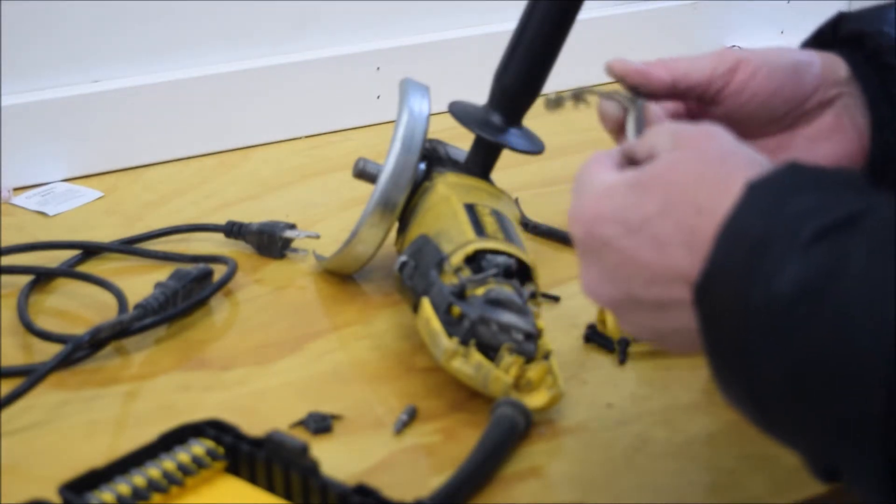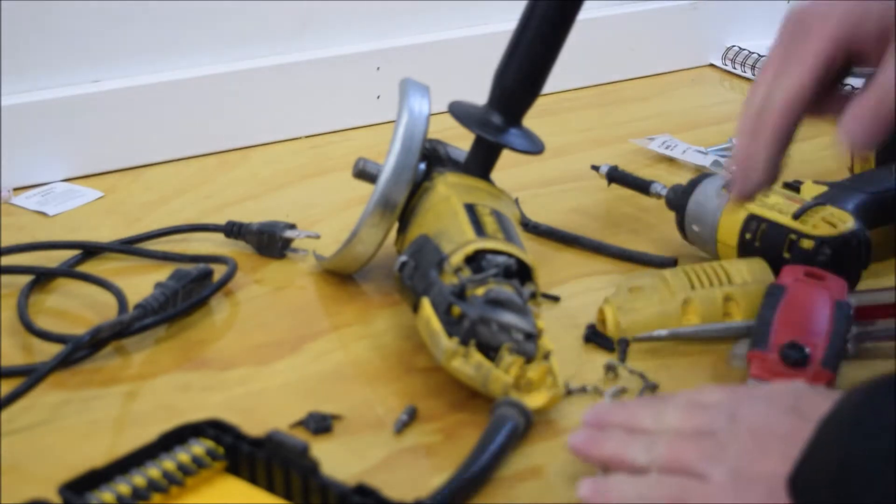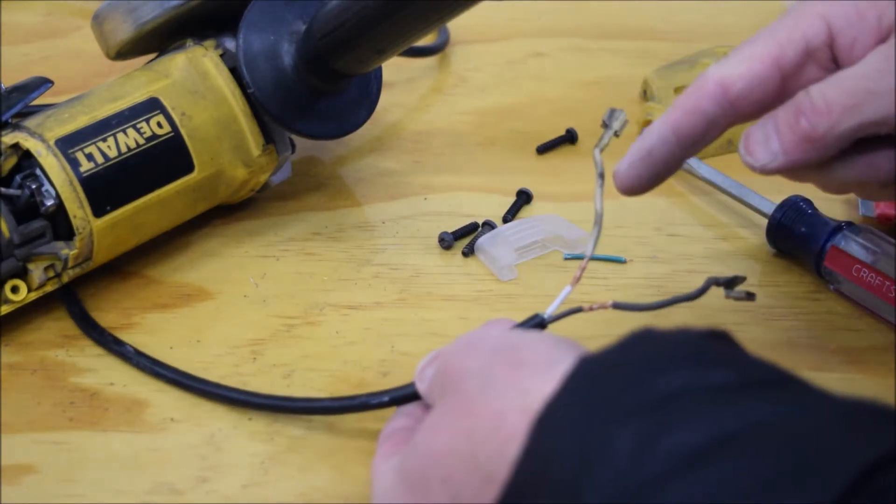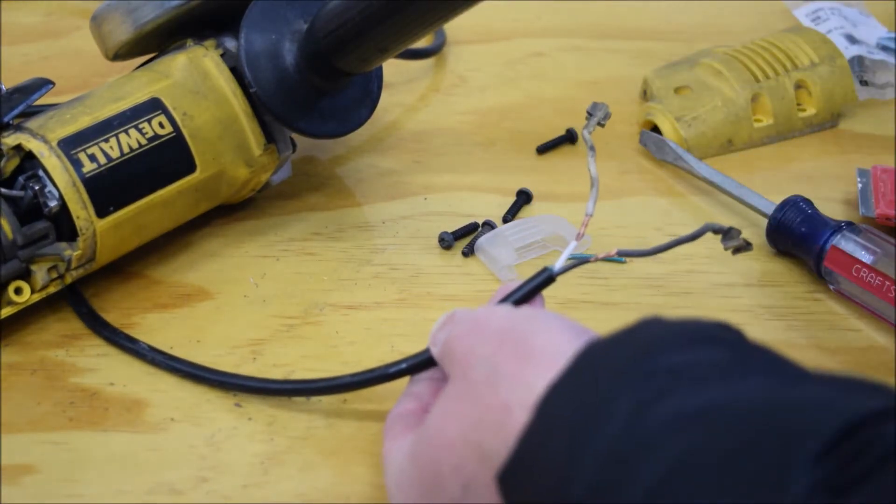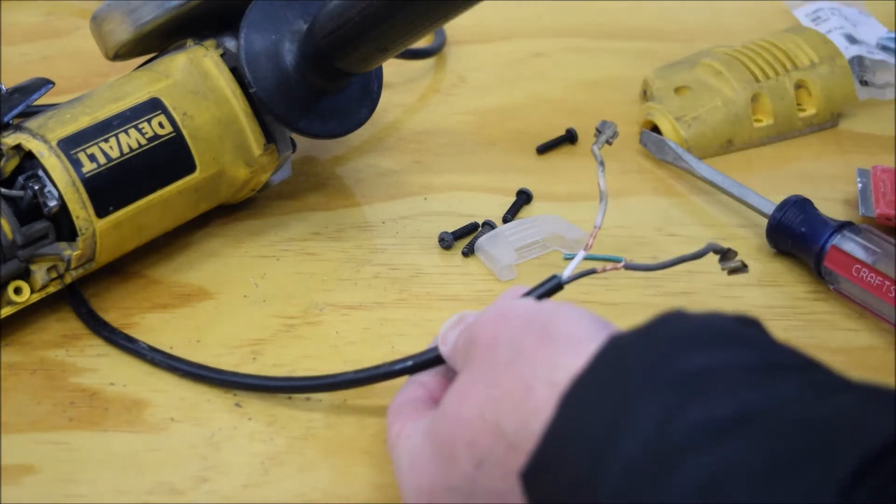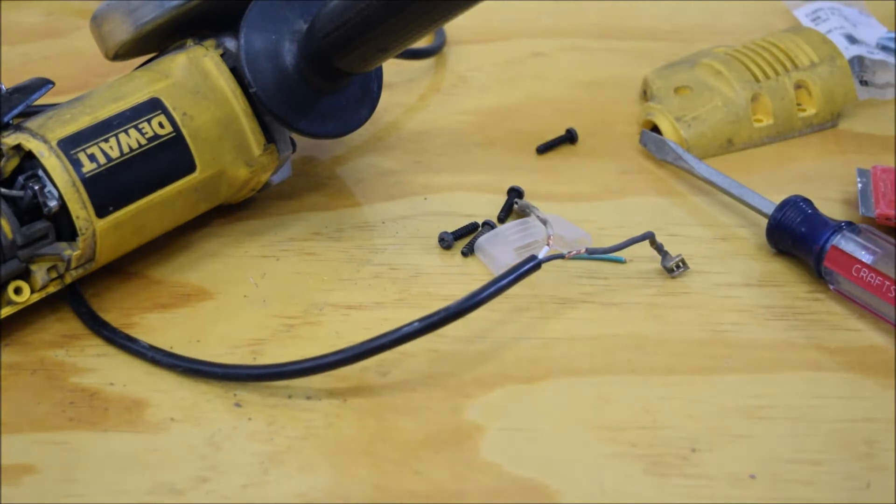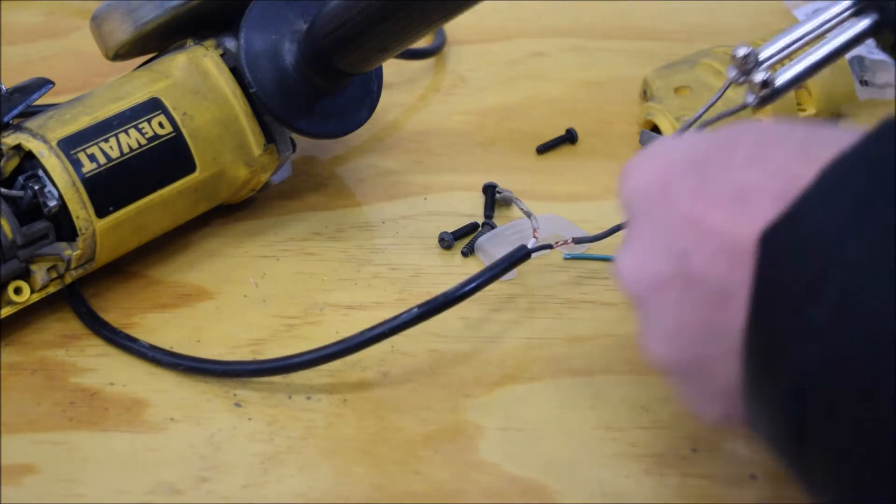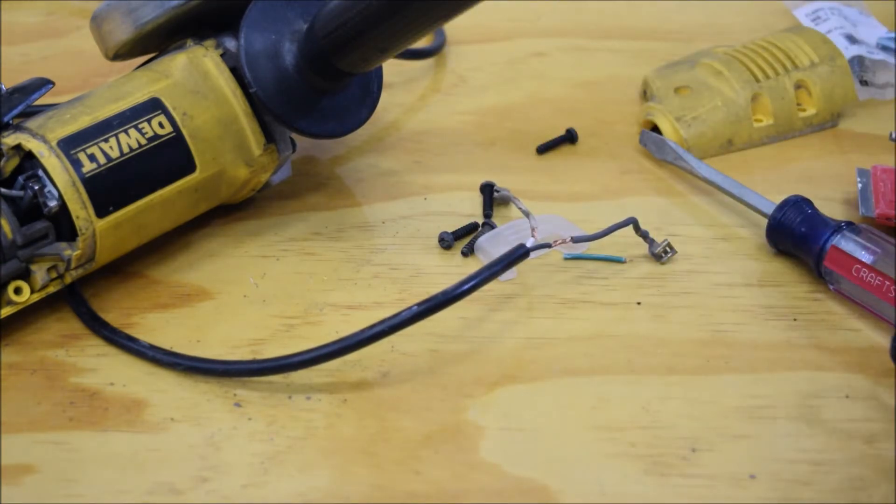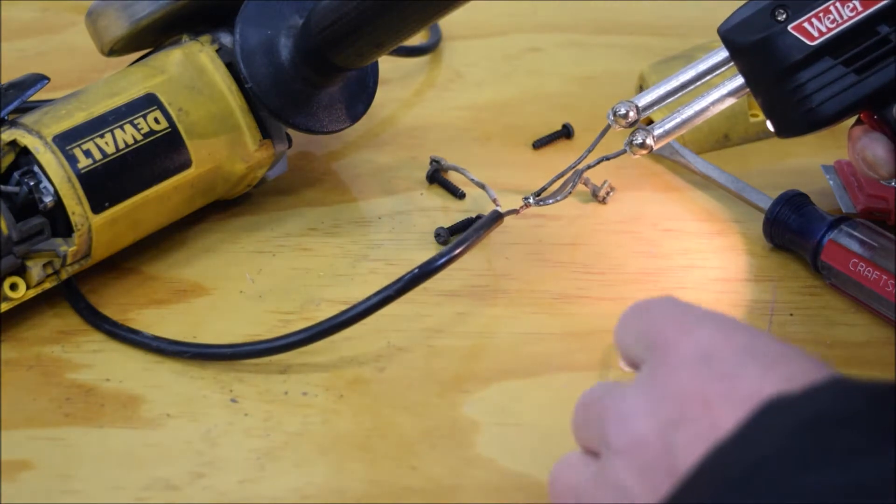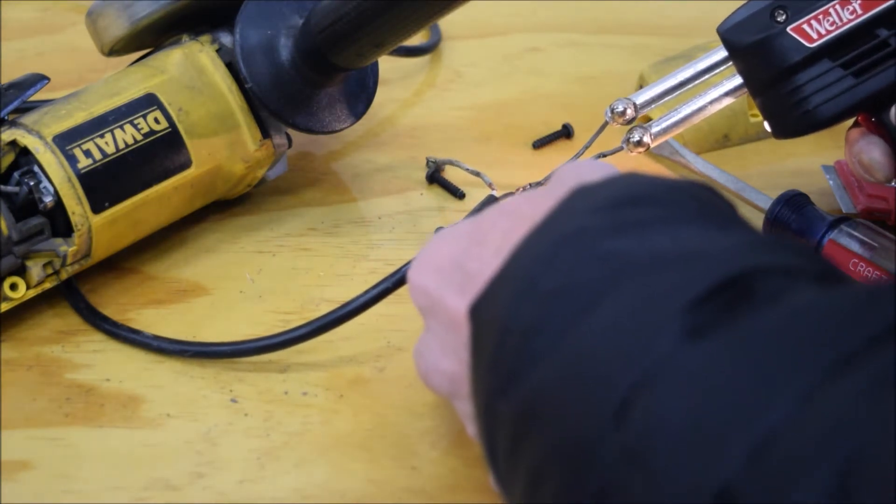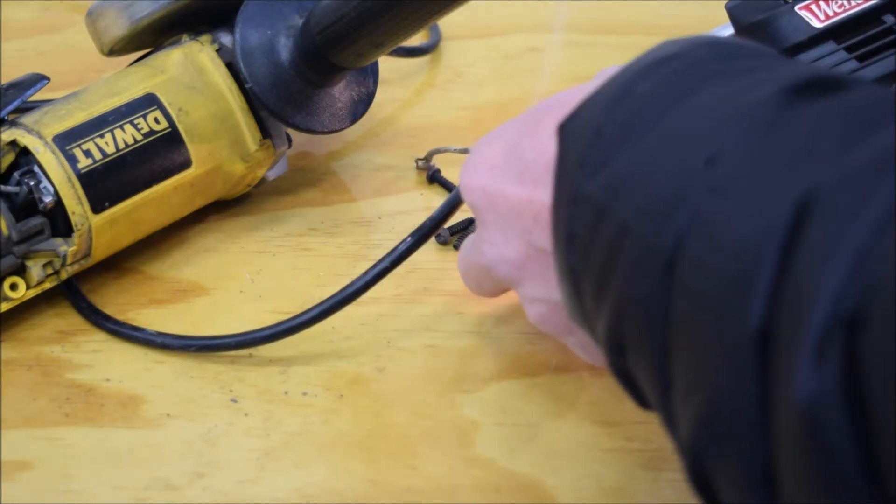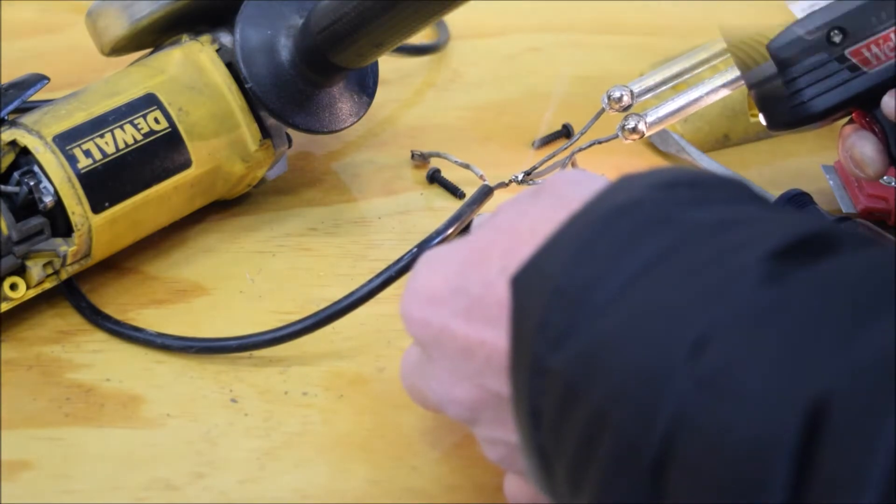So I trimmed off these ends and I trimmed off the end of this plug and I got it all ready to solder. I got my soldering iron now, just gonna heat it up and dab a little solder on it, wrap it in electrical tape. There we go, that melted in really good.